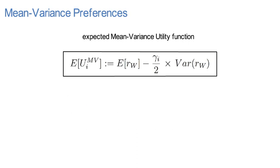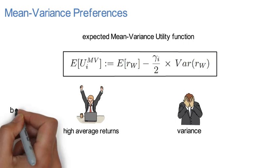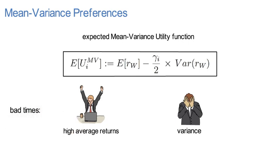Note, a mean-variance preference investor likes high average returns but dislikes variance. So bad times are states where expected returns are low while the variance is large.